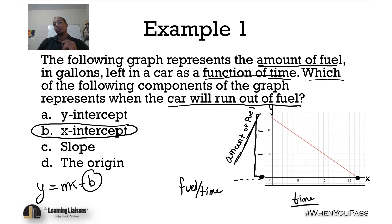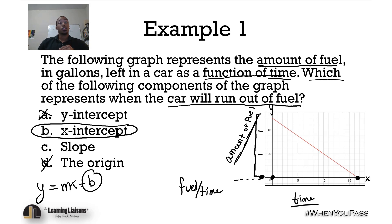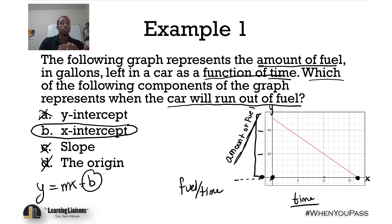The origin is just a distractor answer — it represents the coordinate (0, 0) and has nothing to do with this problem. A and C are incorrect. B is the correct answer because that's where we have no fuel left — where we touch the X axis, which is called the X intercept.